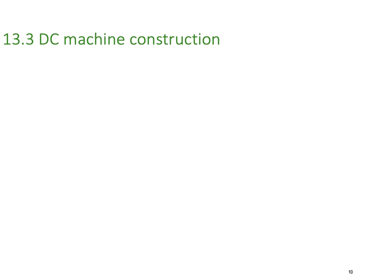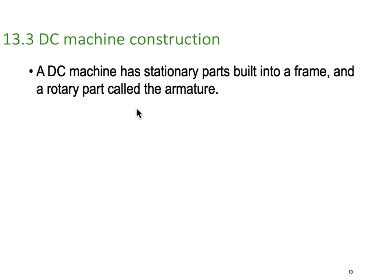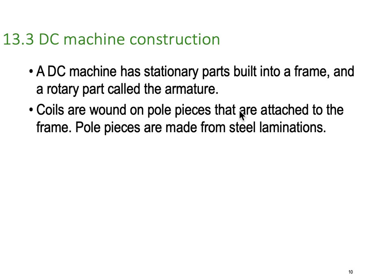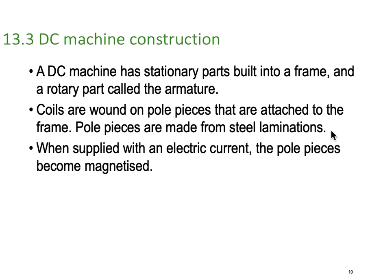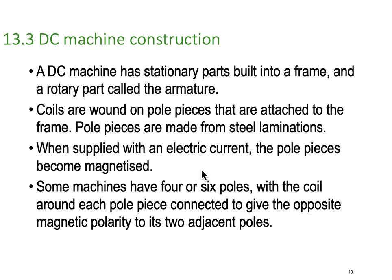A DC machine has stationary parts built into the frame or stator, and rotary parts called the armature. Coils are wound on pole pieces attached to the frame, which are made from steel laminations. When supplied with electric current, the pole pieces become magnetized electromagnets. Some machines have four or six poles, with the coil around each pole piece connected to give the opposite magnetic polarity to adjacent poles.